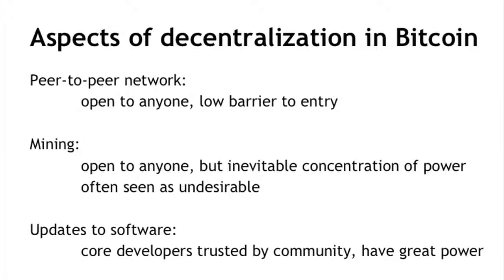A third aspect is updates to the software, which gets to how and when the rules of the system change. One can conceptually imagine that everybody running a Bitcoin node will look at the Bitcoin specification and create their own software — giving a purely decentralized system. But of course, that's not how it works in practice. The core developers are really trusted by the community, and they have a lot of power when it comes to determining what Bitcoin software each of these nodes will run on their computer.